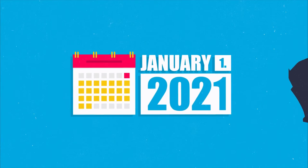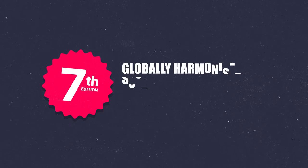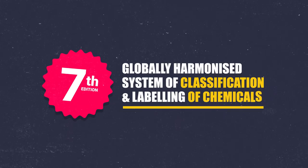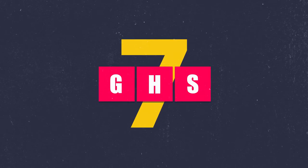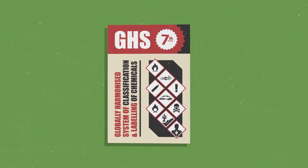On January 1st 2021, Australia began a two-year transition to the revised 7th edition of the Globally Harmonised System of Classification and Labelling of Chemicals, or GHS-7, allowing Australia to implement a more up-to-date version of the GHS.